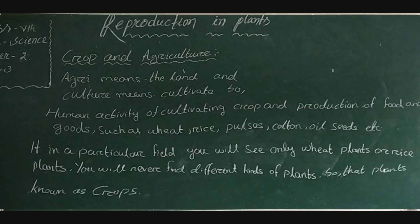Next topic is crops and agriculture. Firstly, what does agriculture mean? Agri means the land and culture means to cultivate or to tend. So, agriculture refers to the human activity of cultivating crops and planting for production of food and goods such as wheat, rice, pulse, cotton, sugarcane, jute, oil seeds, etc. We know that plants provide food, oxygen, medicine, etc. to us. We grow plants on a large scale so that we can get enough food and other products to fulfill our needs. This practice of growing plants on a large scale for food or other products is called agriculture.